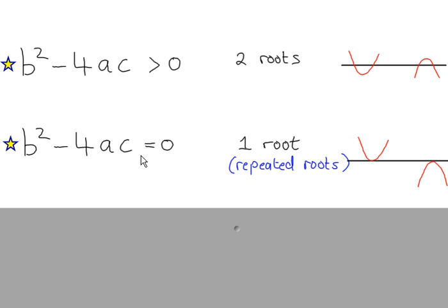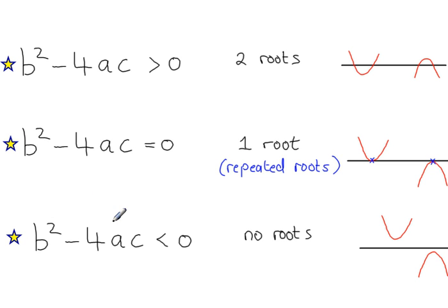If the discriminant is zero, then you have a single root or a repeated root. As you can see from the examples here, this curve just touches the x-axis at a single point, and so does this one — so there is only one root in each of these. If the discriminant is a negative value — less than zero — then you have no roots. That's to be expected because the curve does not interact with the x-axis, so there are no roots.